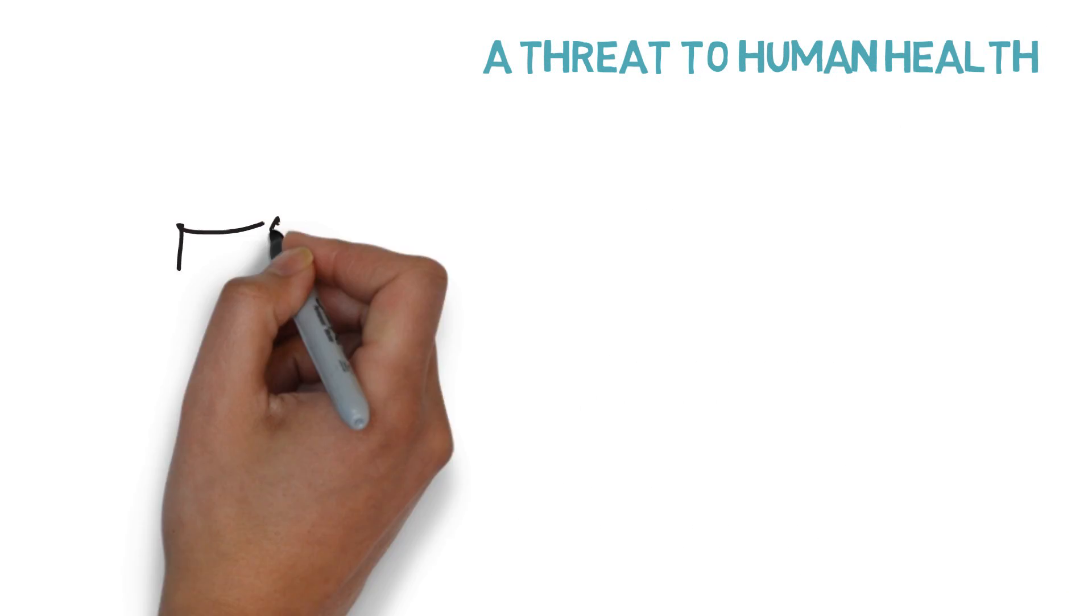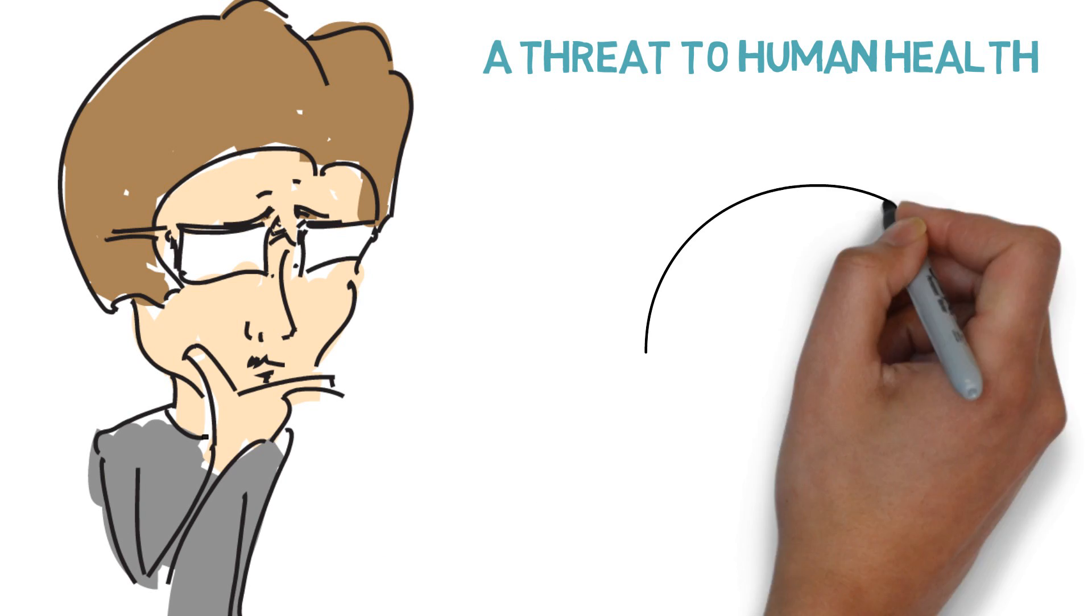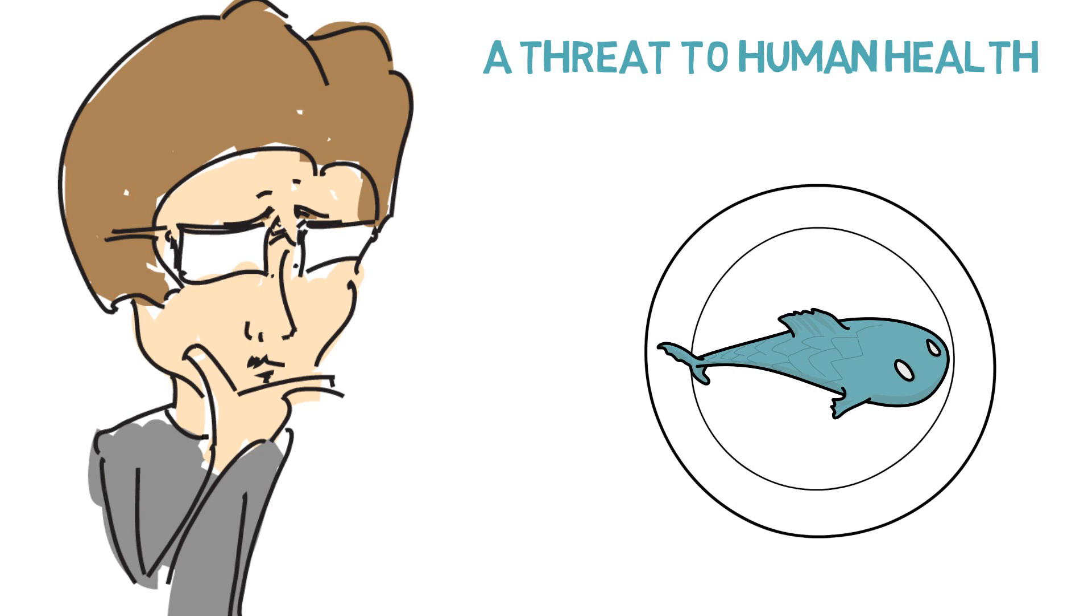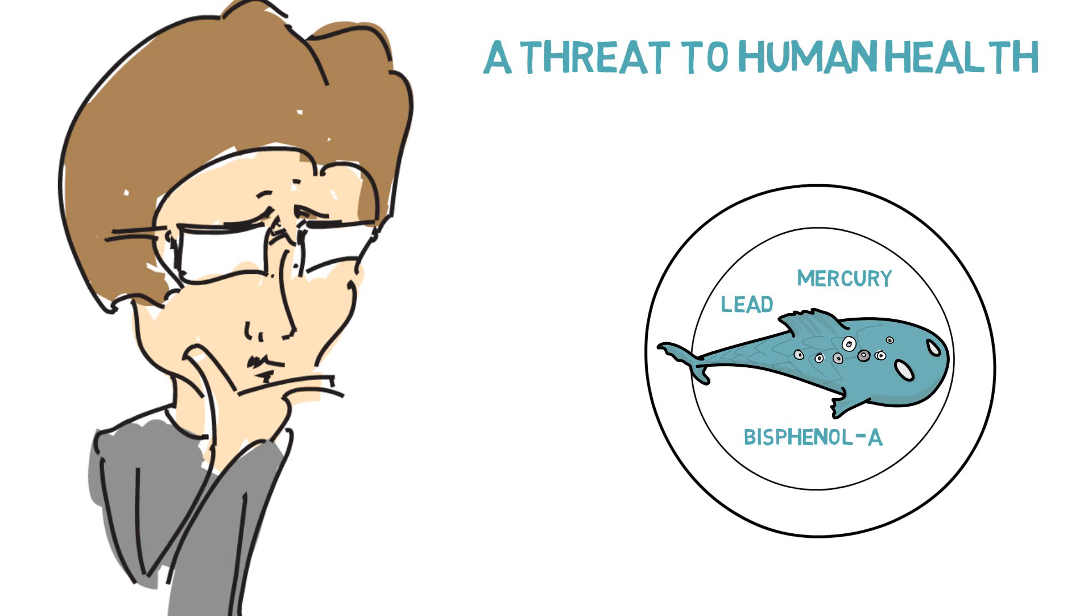But plastic is not only dangerous for the environment, it is harmful for people. By eating fish or other seafood which was contaminated by toxic chemicals from plastic, we are slowly poisoning our bodies.